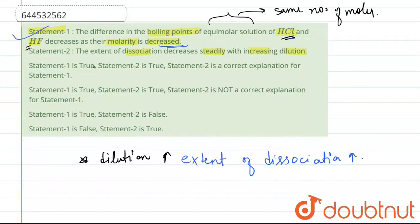So we can say that assertion is correct. Now, talking about statement 2, it is saying that extent of dissociation decreases, but we have seen that it increases, so this statement is wrong.